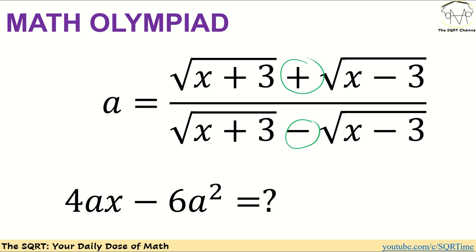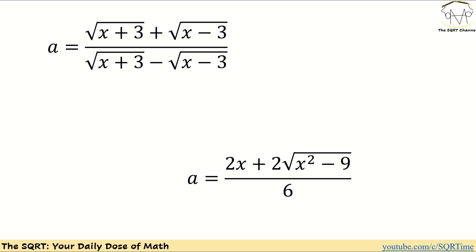Based on what we have for a, we are going to evaluate 4ax minus 6a². To simplify things, I'm going to use some tricks. Basically, when we have a fraction based on radicals, the identity I'm going to use is: (a - b)(a + b) = a² - b².